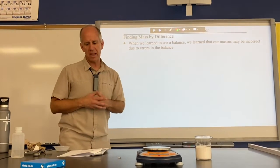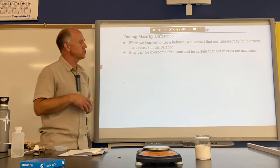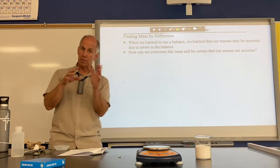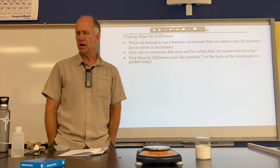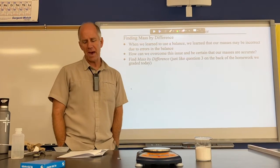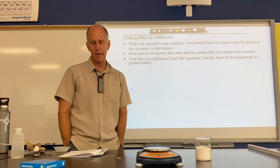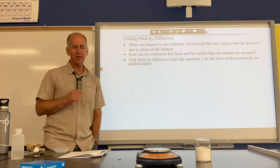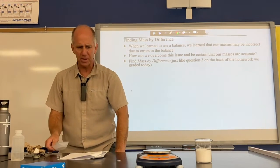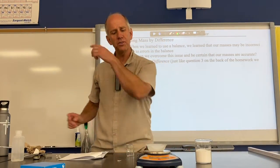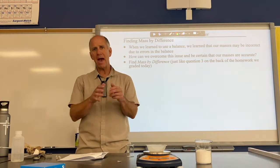Our masses can be incorrect due to errors in the balance, so we learned how to overcome this. Here's an example — let's find the mass of some salt. We could just put a weighing boat on the balance, hit zero, put the salt in, and done — but that number could be wrong if the balance is inaccurate. Instead, we hit zero first, then weigh just the beaker. Let's say the mass is 31.63 grams — record that mass.